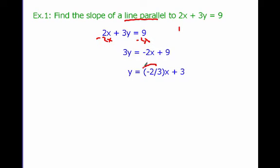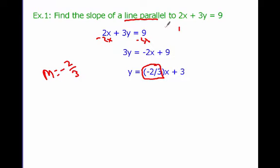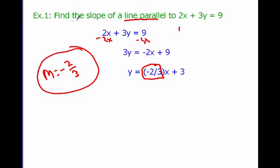From our video on slope, this coefficient — m equals negative 2 thirds — is the slope of our line. And since the slopes of parallel lines are the same, this will be the slope of our parallel line. So if two lines are parallel, they just need to have the exact same slope.